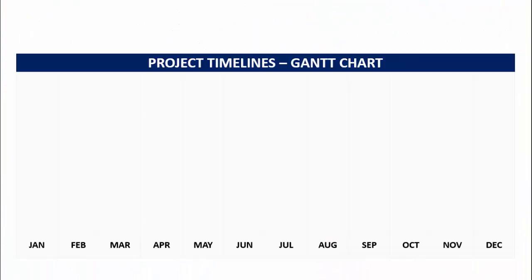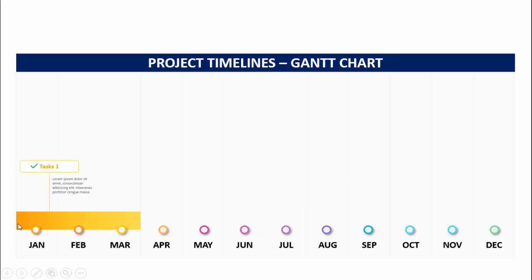In today's tutorial I'm going to show you how to create 12 months of project timelines or Gantt chart in PowerPoint. I've created a table with 12 months from January to December and it is an animated slide. For each month I've given different color combinations in the form of oval shapes. When I click, the first task appears — starting from January till March — and here you can add the task name and task details. A right tick mark means the task is already completed.